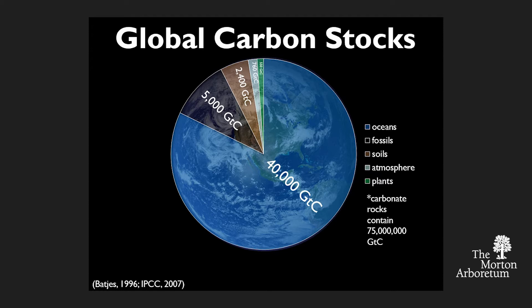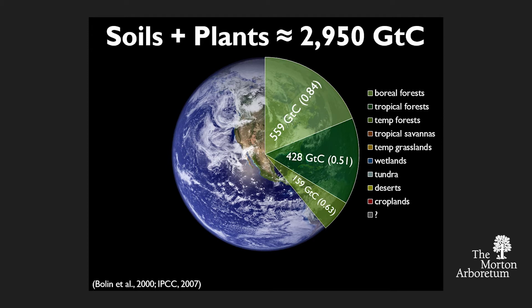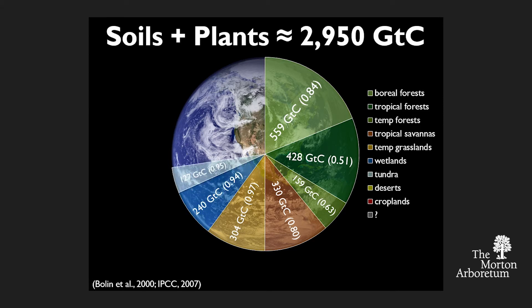Soils are a very important store of carbon across the globe. Within biomes, that proportion of carbon stored in vegetation versus below ground does vary. The number given in gigatons is the total carbon stock, and the number in parentheses is the amount stored below ground relative to total carbon. We have a lot of carbon in our forest systems, then prairie systems, wetlands, tundra, croplands, and deserts.